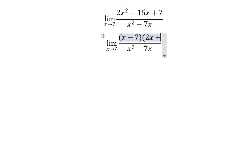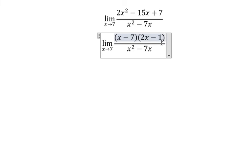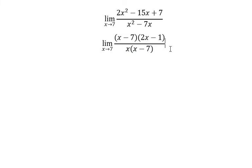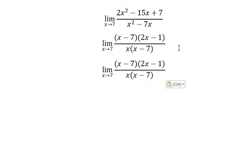We got s minus something, multiplied with s minus seven. We simplify s minus seven on the numerator and denominator.